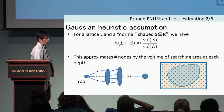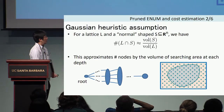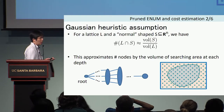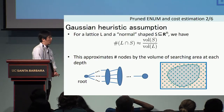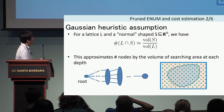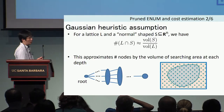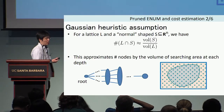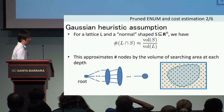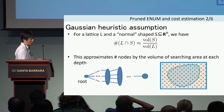Next is the Gaussian heuristic. Consider a lattice in n-dimensional space and a normally shaped object S. The number of lattice points inside S is approximated by the volume of S divided by the lattice determinant. This approximation can be used to estimate the number of nodes in the enumeration tree and also the cost of the enumeration.